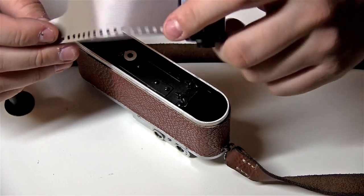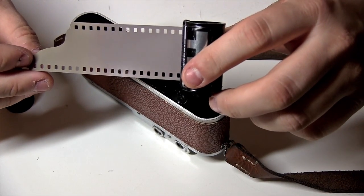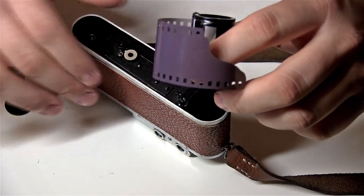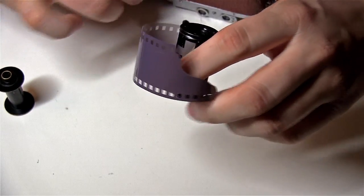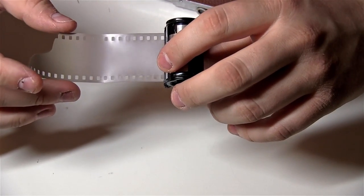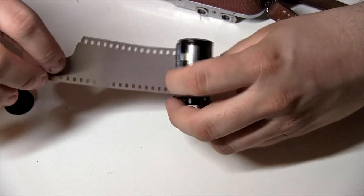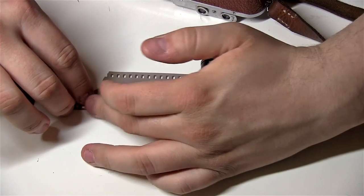Now the thing is I have a long piece of film here, but the bottom sprocket holes actually make this rather impossible to load. So we have to cut the film in order to make a longer lead.